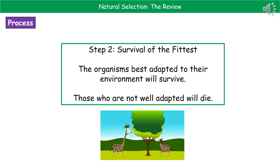The next step is what Darwin referred to as survival of the fittest. Quite simply, this tells us that the organisms that are best adapted to their environment will survive. If they're not well adapted, then they die.